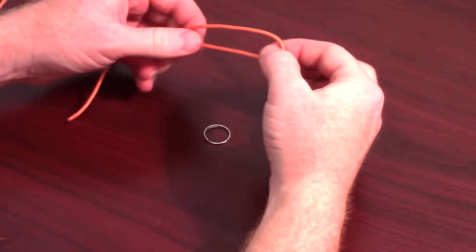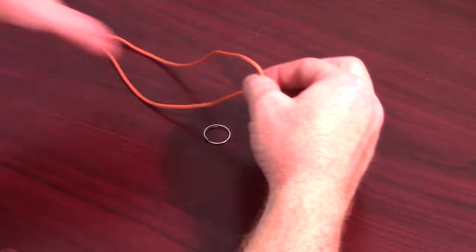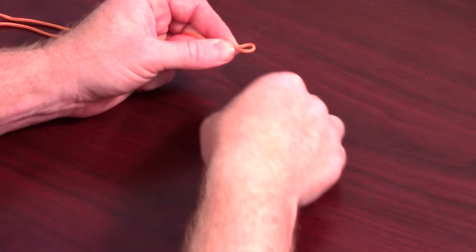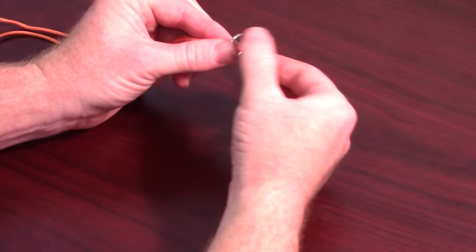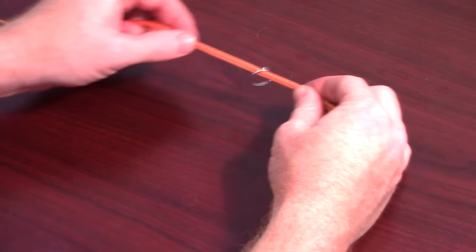Start by doubling up the line and give yourself lots of room. Then put the loop created through the hook eye and pull out a few inches of line.